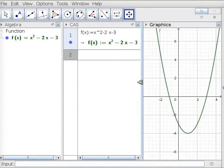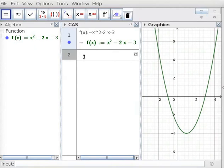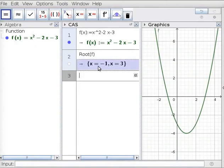Drag boundaries to see CAS view properly. In line 2 of CAS view, type root(f). Press Enter. The roots appear below in the same box in curly brackets. Note that these are the x-intercepts of parabola f in graphics view.